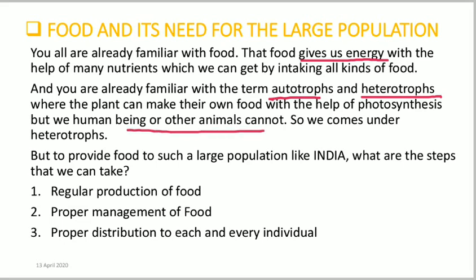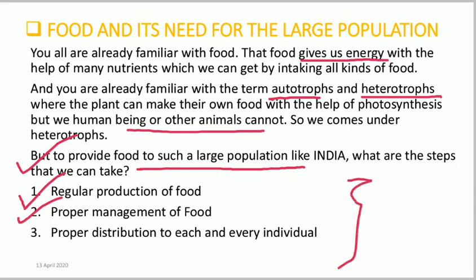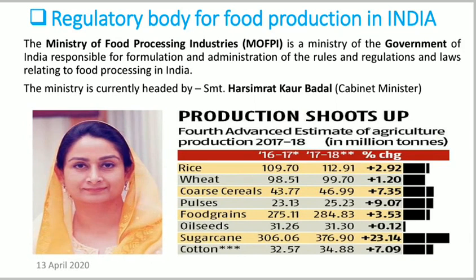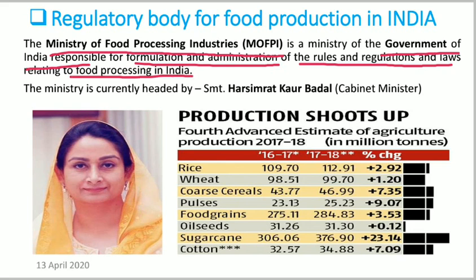Heterotrophs are dependent on autotrophs — human beings and other animals cannot make their own food. A question arises: to provide food to such a large population in India, what steps should we take? First, there should be regular production of food; second, proper management of food throughout India; and third, proper distribution of food to each and every individual. The Ministry of Food Processing Industry, governed under the Government of India, is the regulatory body responsible for formulation and administration of laws and regulations relating to food processing in India.